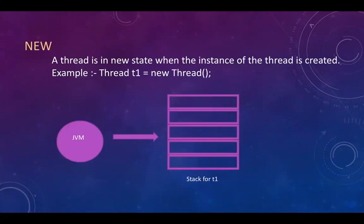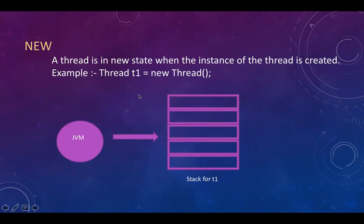A thread is in the new state when an instance of a thread is created. For example: Thread T1 = new Thread(). As soon as we create this thread instance T1, this thread is in the new state. What JVM does is: whenever a thread gets created, JVM creates a stack for that thread — so it will create a stack T1 for this thread. This is the new state.